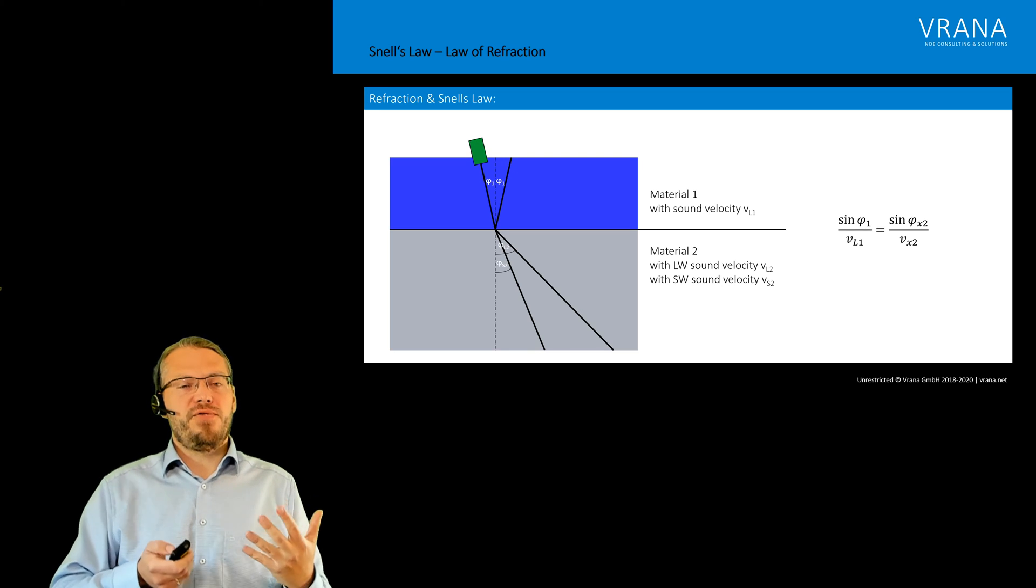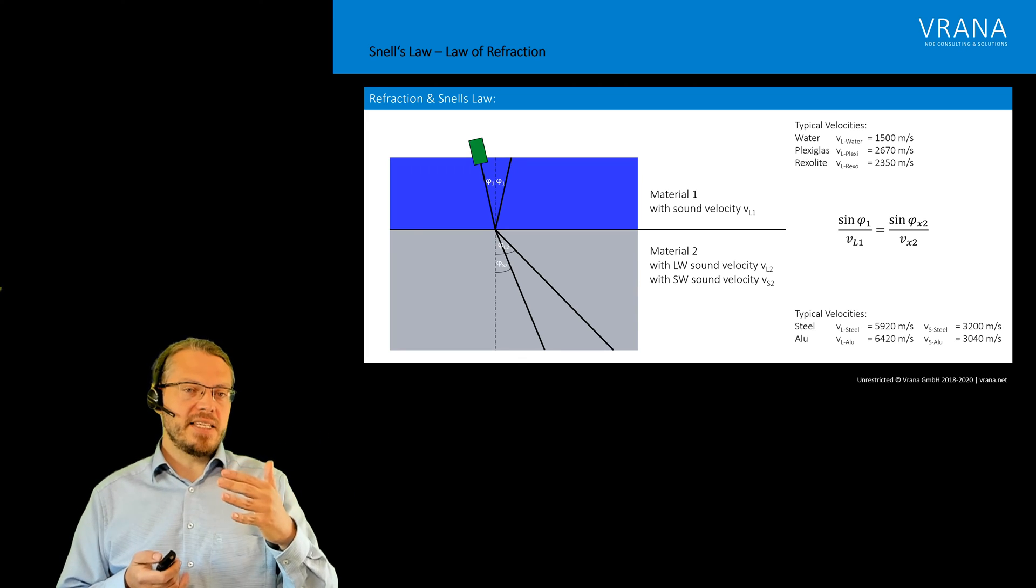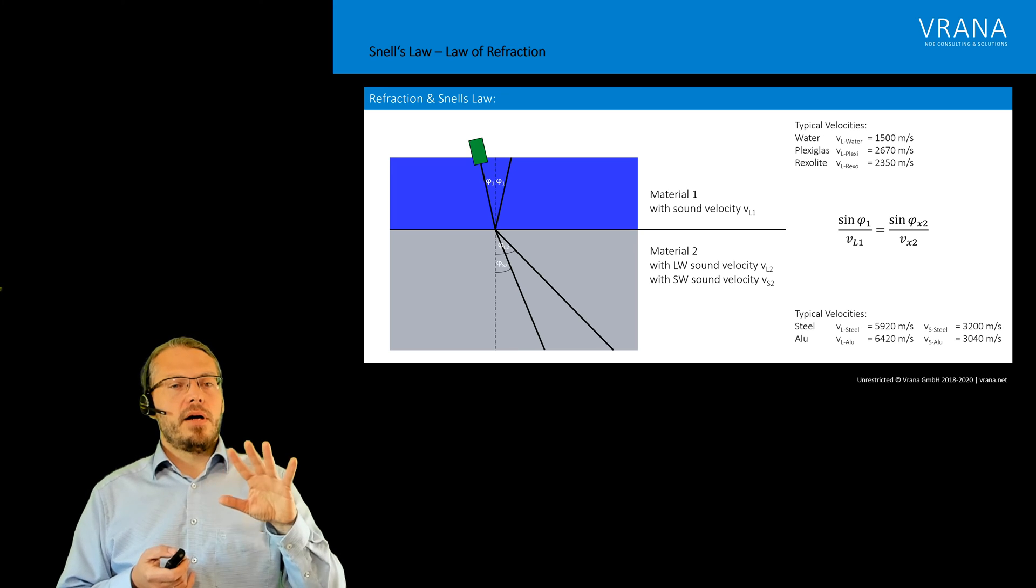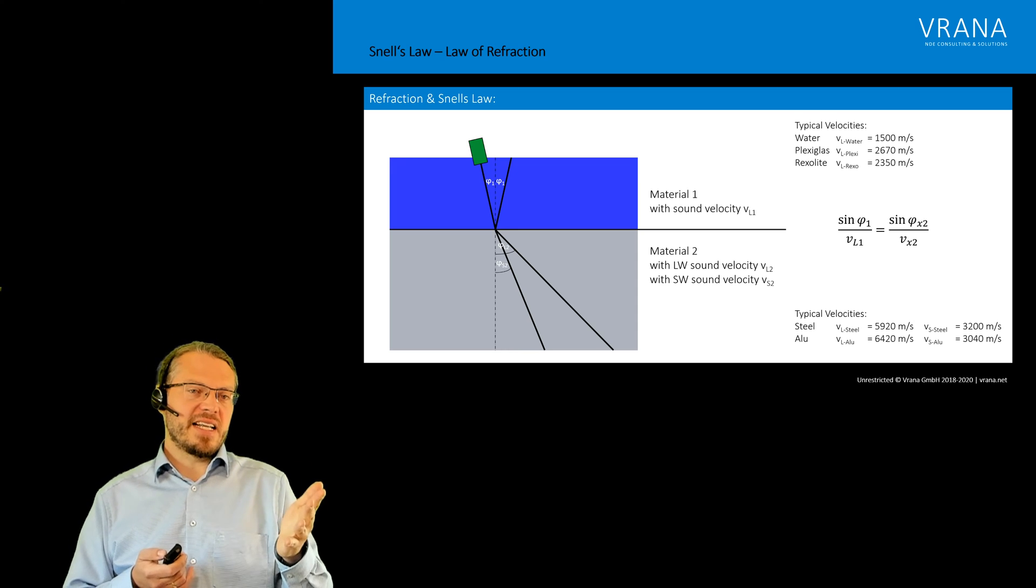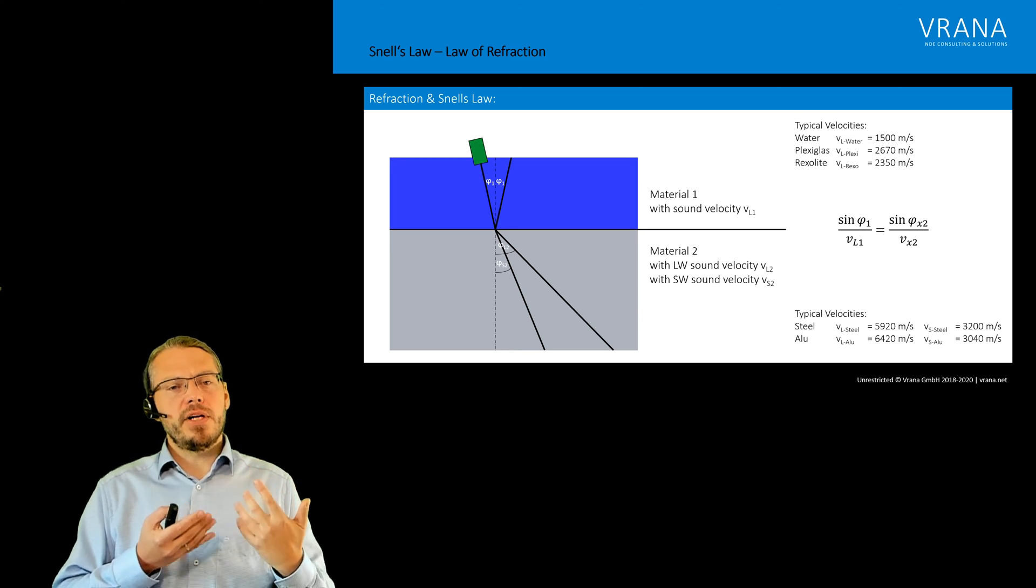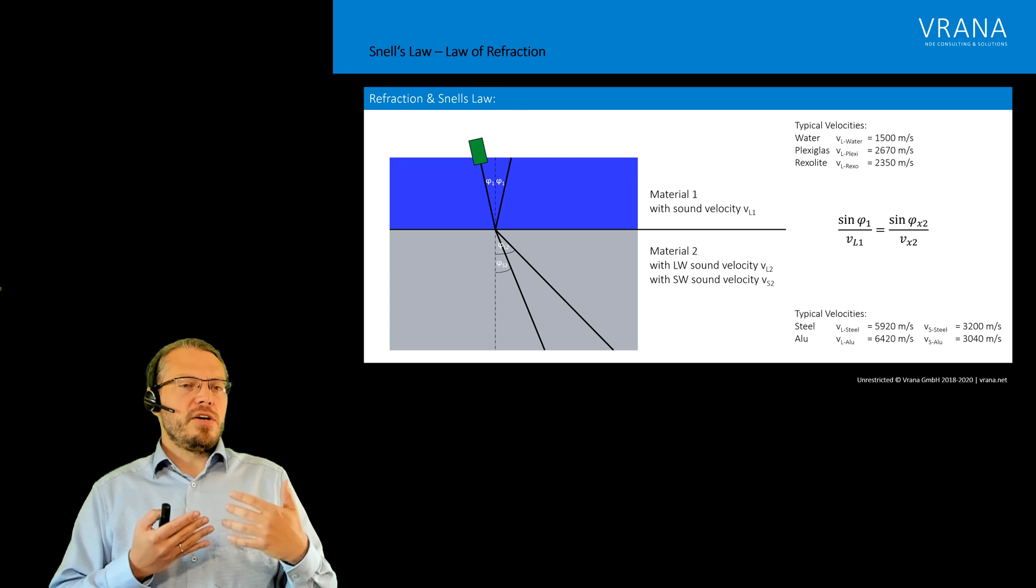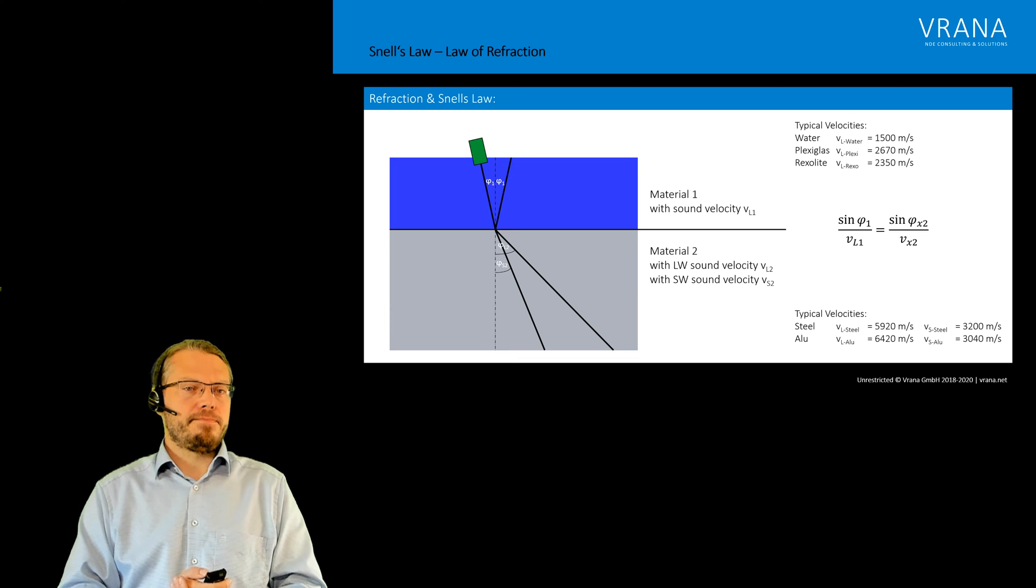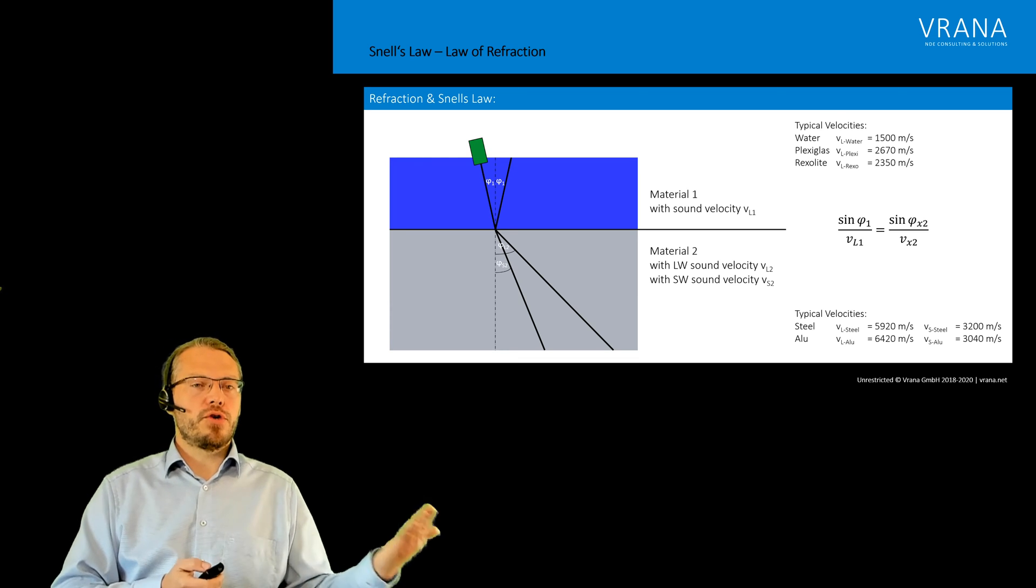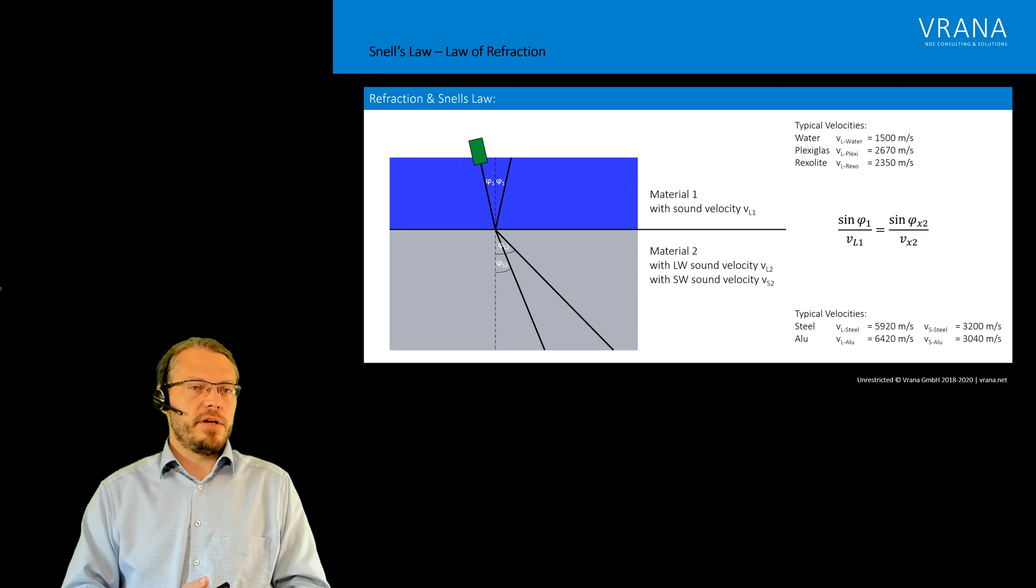Now to give you a little bit of feeling about the speed of sound we have in the different materials: that's about what we have in water, that's what we have in plexiglass and in rexolite. Now rexolite might be the material you want to use instead of plexiglass because your sound attenuation is better in the rexolite and your coupling to the media is better. You get a better signal to noise ratio using rexolite than plexiglass. That's why I have it here. And then we have our typical velocities in steel and aluminum and whatever material you want to inspect.